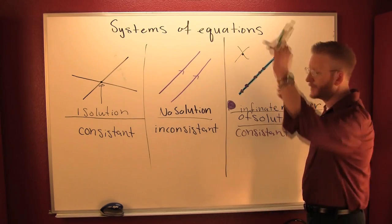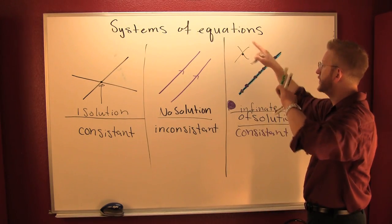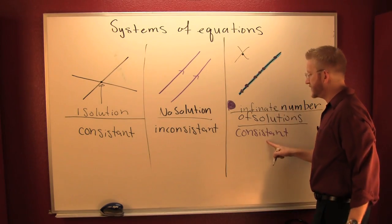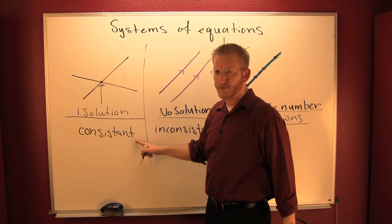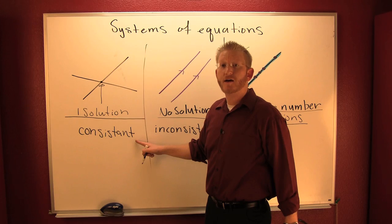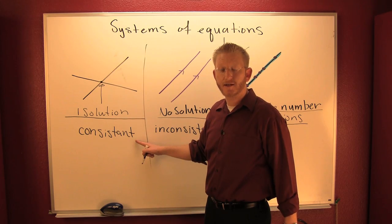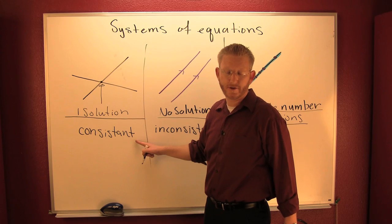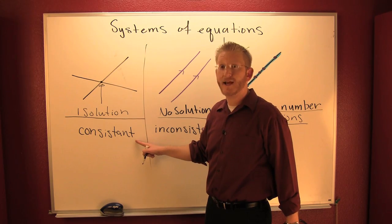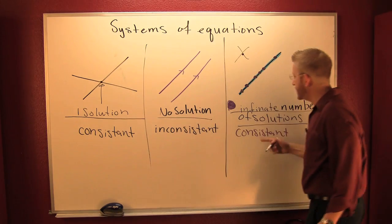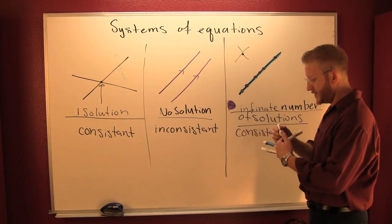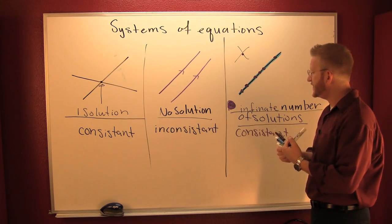So that's consistent. How are we going to tell this system apart from that system? Now we're talking about the dependency of lines. If the lines in your system are the same line, they're dependent. Further, if they're dependent, then they have the same equations, or at least are multiples of each other. This is dependent.